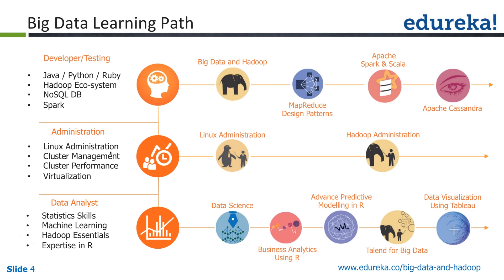As a big data developer, it will be expected that you should be conversant with at least one NoSQL database — either Cassandra, MongoDB, or any other NoSQL DB. Spark is also something you should know, which is an in-memory processing framework in Hadoop. This is typically your learning path if you are a developer.